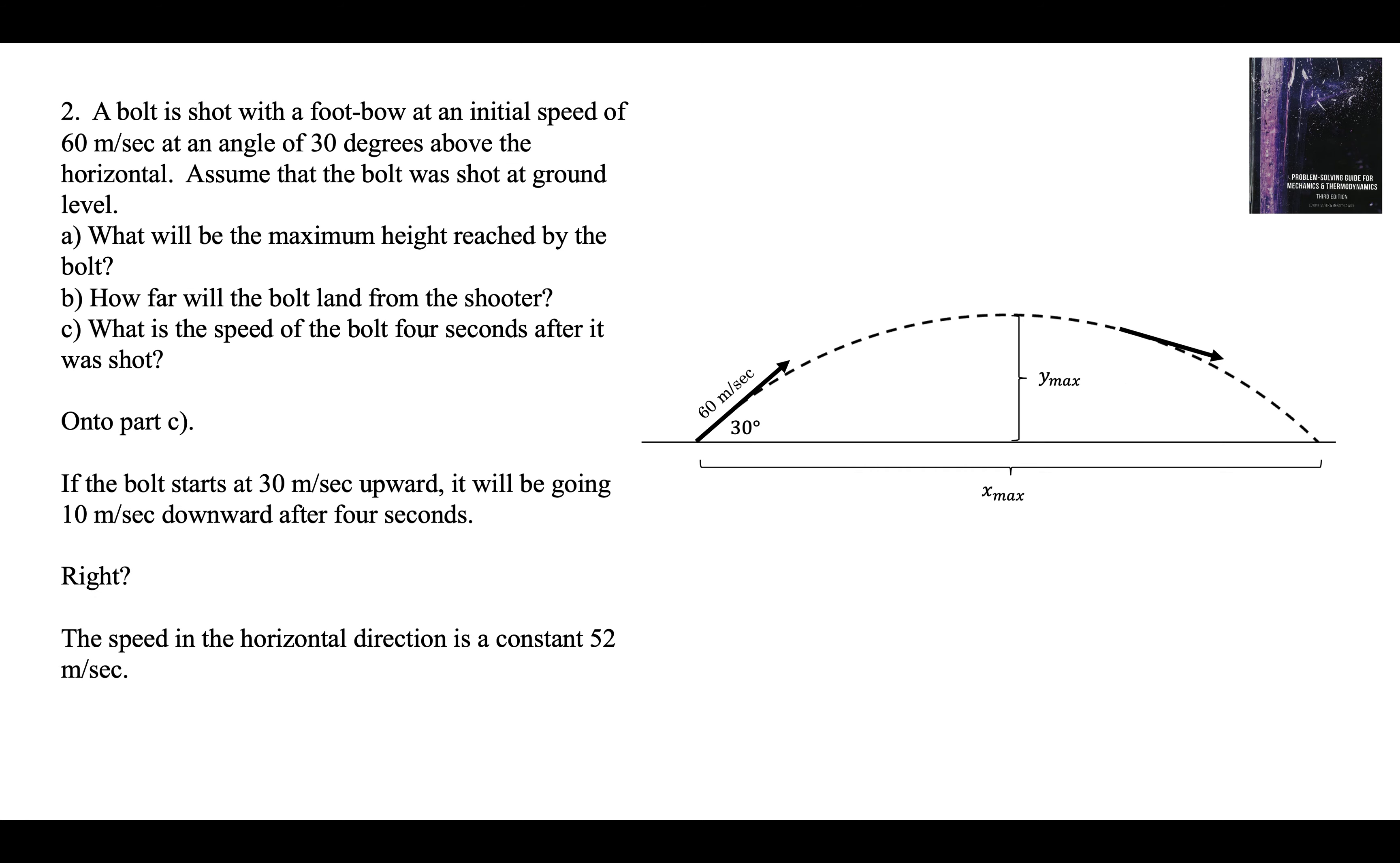The horizontal component of the speed is 52 meters per second. It doesn't change. So now we can get the speed of the bolt because we have the x component and the y component. We use the Pythagorean theorem. y is minus 10 meters per second. x is plus 52 meters per second. And we get 52.9 meters per second. That's the length of that velocity vector at 4 seconds.